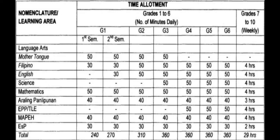Filipino's total of 50 minutes daily is the same as English and Science. For Mathematics, the time allotted from grade 1 to grade 6 is the same — 50 minutes daily. Same as Araling Panlipunan, which is 40 minutes daily from grade 1 to grade 6.